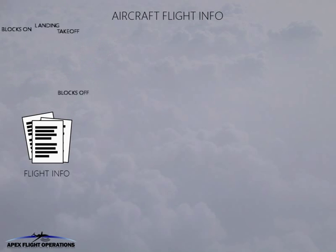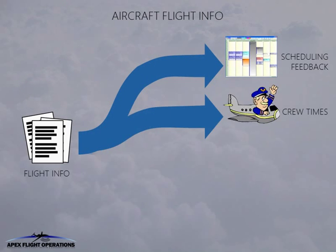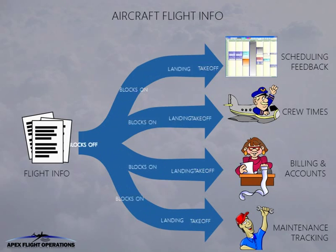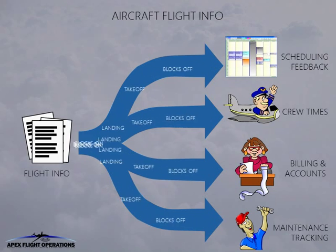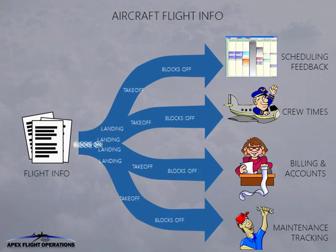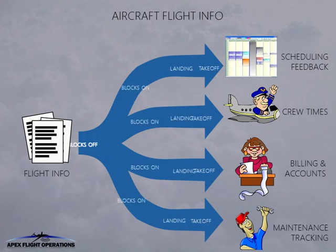In most aircraft operations, flight data is gathered manually from flight folios and pilot reports. This information is processed and entered into a number of systems, including flight scheduling, crew time management, billing and accounts, and maintenance tracking. Although aircraft operators can choose from some very sophisticated software solutions for handling each of these important areas of the aviation business, they are all dependent on reliable, accurate times from the aircraft.